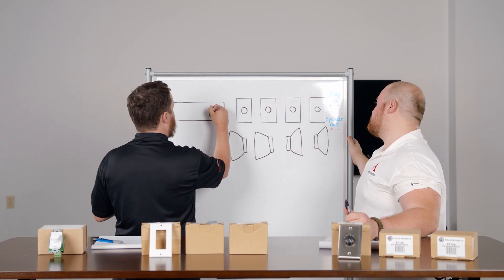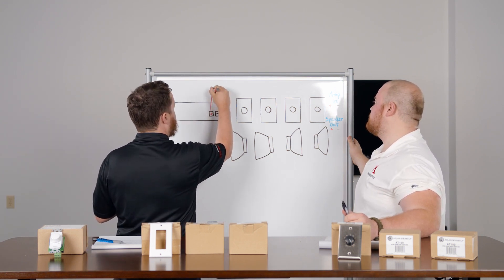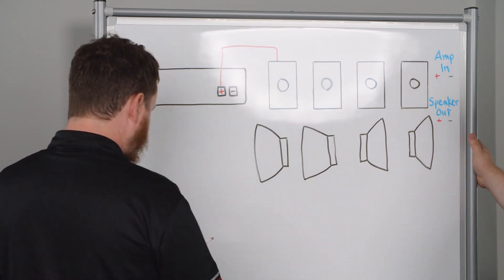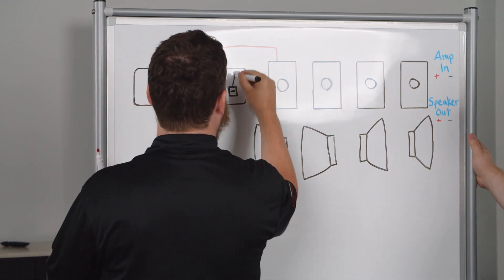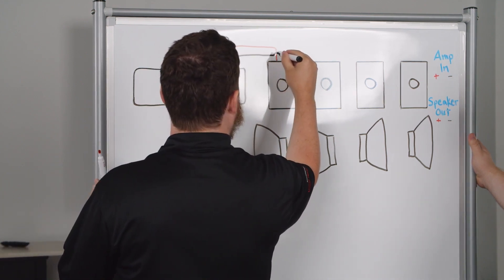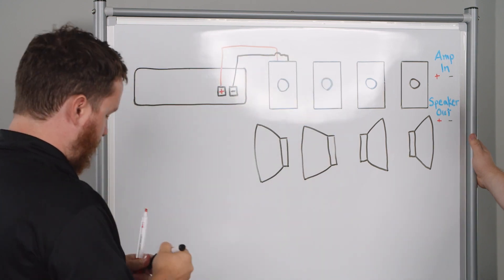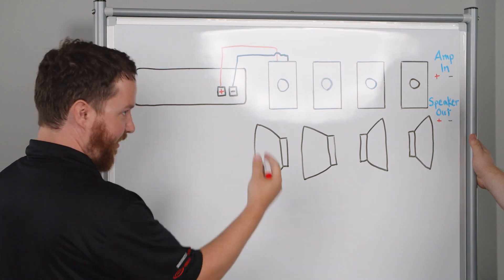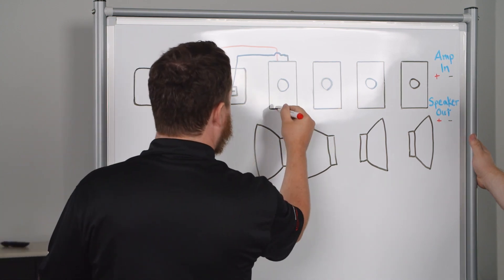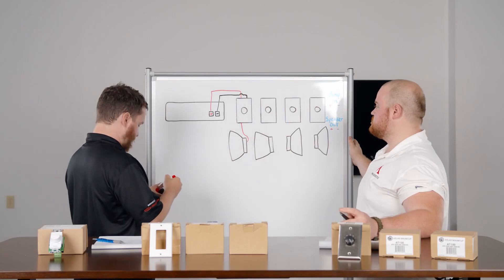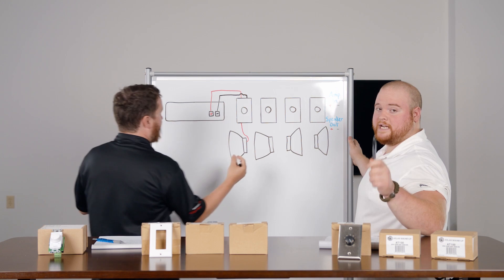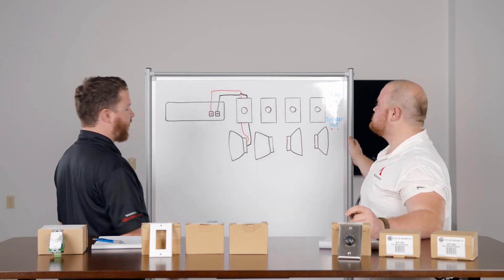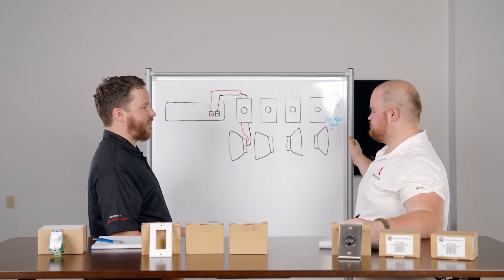So to go to our first volume control, I'm going to come out of my positive terminal and I'm going to go into the amp in on my first volume control. I'm going to repeat that same thing with my negative, and then from there, I'm going to come out of the speaker out side, which is the attenuated side, meaning it's adjusting the level. I'm going to come down there into the positive, into the positive terminal on the speaker. Positive to positive, negative to negative. And I'm going to do the same thing with the negative. Speaker one is done. That dial controls that speaker.